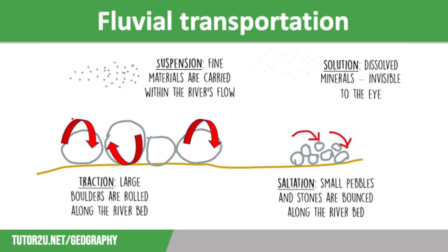The third process of transportation is suspension. This is fine, light material — also known as silt — that is carried along with the river's flow as a suspended load. This is what often makes the river look really dirty when it actually isn't; particles carried in suspension will settle at the bottom if kept in a jar of water. And finally we have solution, where minerals are dissolved in the water and tiny invisible particles are transported by the river — not to be confused with the erosional process of solution.